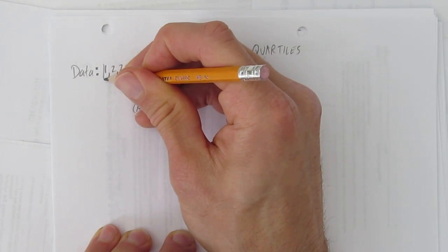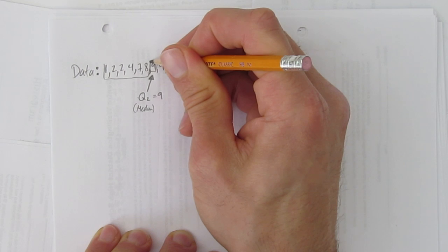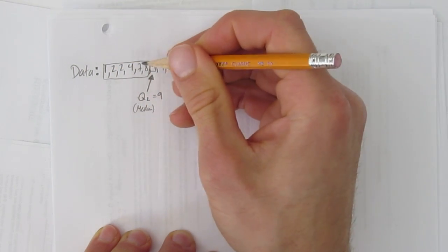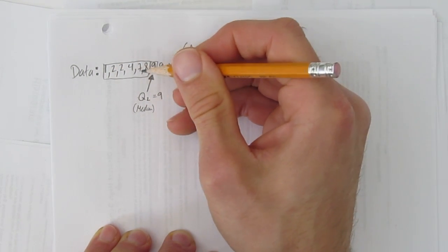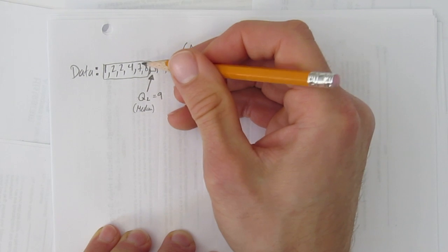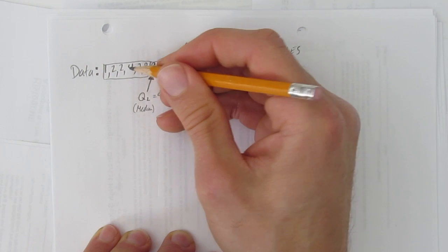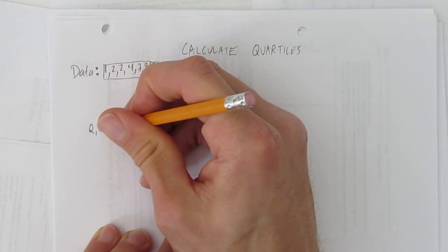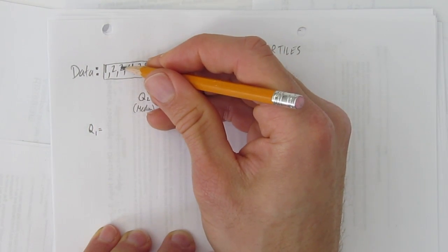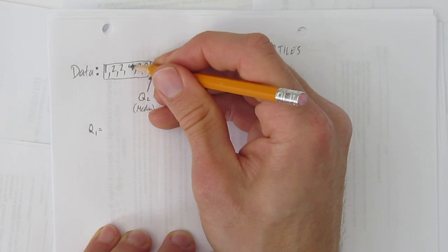Now we want to find Q1. So we take the bottom set of numbers, and we want to find the middle of these 6 numbers. Well, when you have an even amount, you have to take the average of the middle 2. So Q1, in this case, the middle 2 numbers are the 3rd and the 4th number.